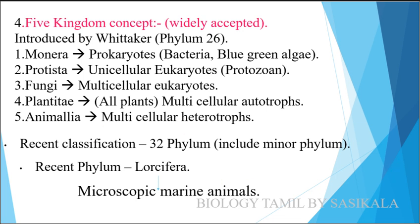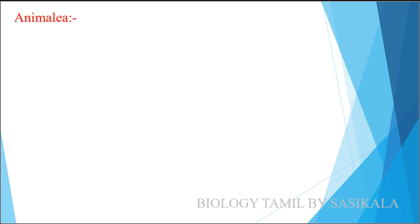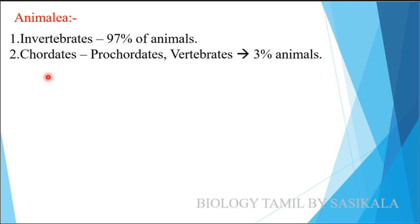Animals are divided into invertebrates and chordates. In the world, 97% of animals are invertebrates. The remaining 3% are vertebrates and proto-chordates — together forming the chordates.